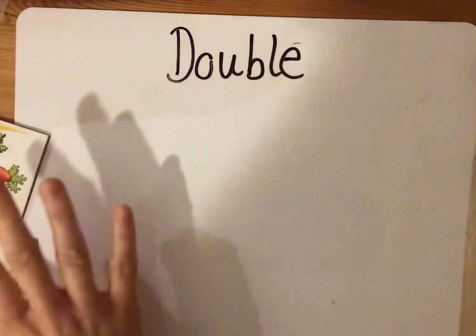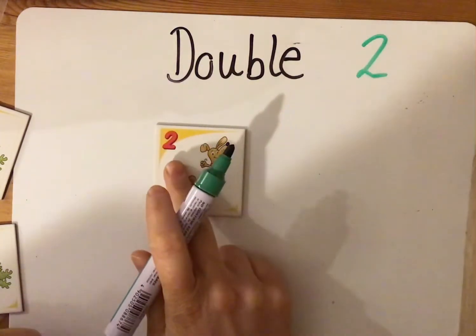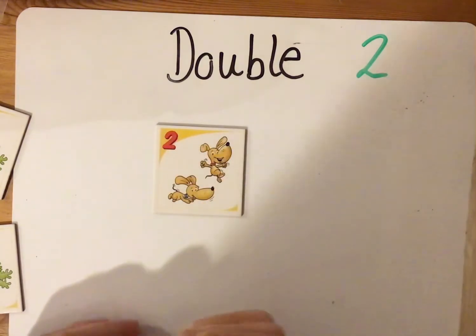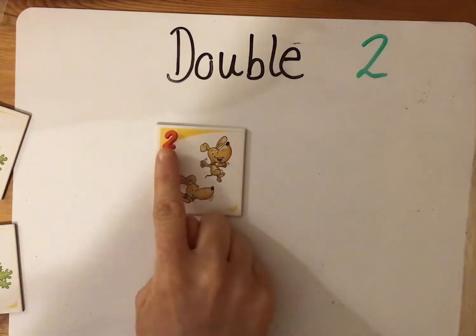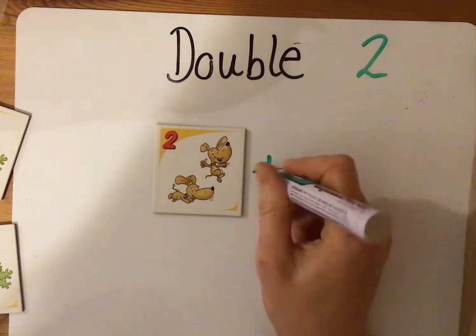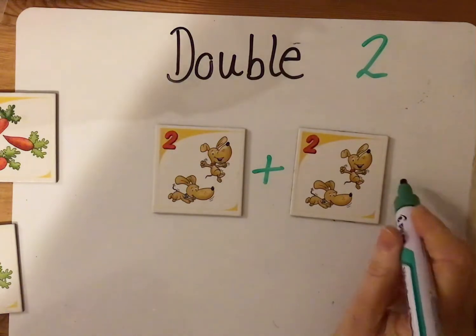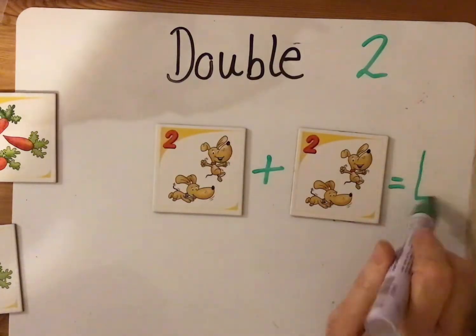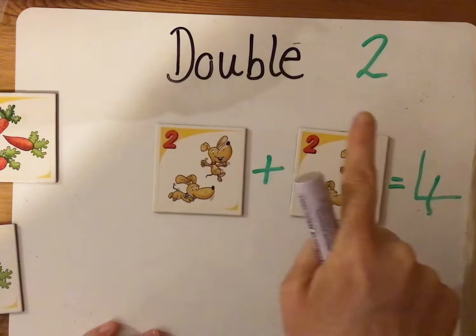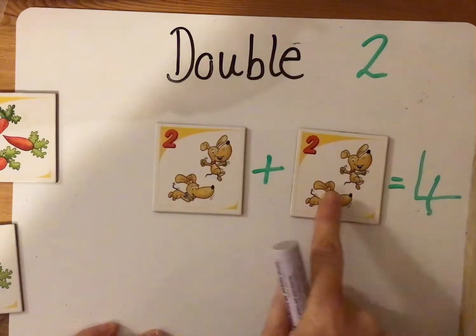So I've got some lovely pictures here that are going to help us. I want to double two. I've got two here and I want to double two. So what do I need to add if I want to double? Do you remember what I said? I need to add the same number again. So I need to do two add two equals one, two, three, four. So double two is four because we added the same number again — we had two and then we added another two and we got four.